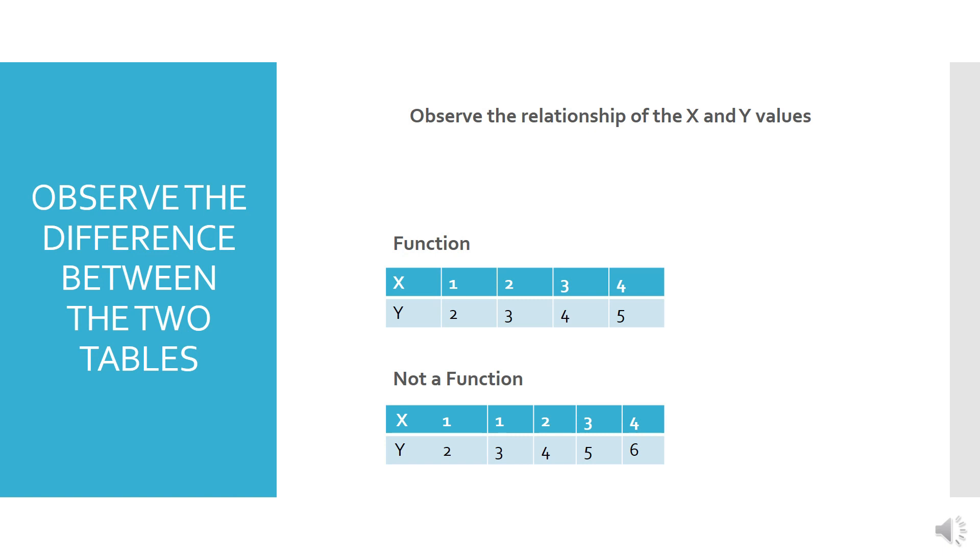But, as you can see in a table that is not a function, number one is being repeated twice in the x domain, has a relationship with two numbers in y. Therefore, that is not a function. A function is an ordered pair if there is one unique number in the element of x, which is not being repeated, has a relationship with a unique number in y.